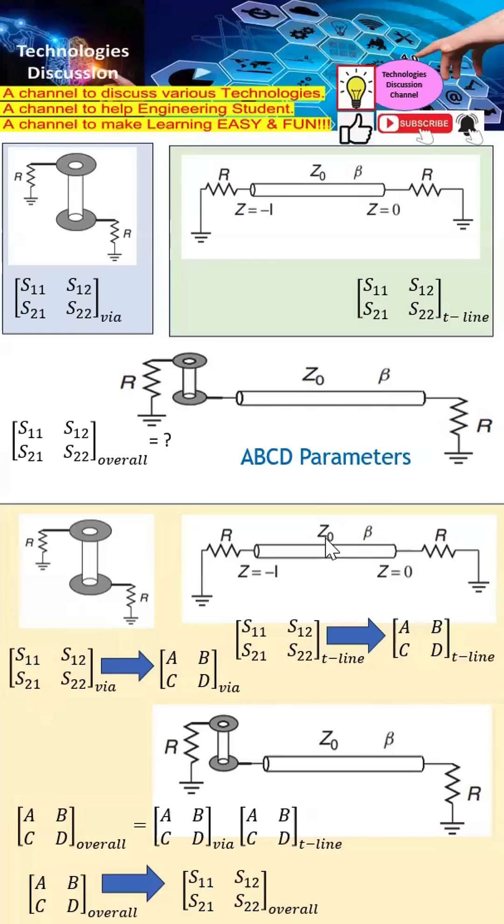As for the transmission line, I do the same. I convert the S parameters into the ABCD parameters. From this equation, you can see that I can easily obtain the overall ABCD parameters by doing these steps here.